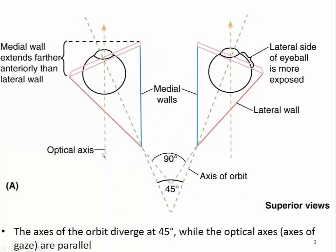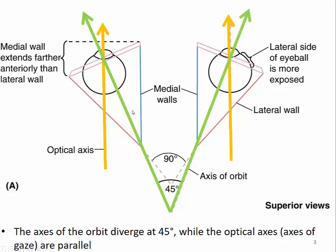Most importantly, to understand why the extraocular muscles act in the way they do: the optical axis diverges by about 45 degrees from the axis of the orbit. The orbits look like pyramids, and when the gaze is straight forwards — the primary position — we have a 45-degree angle between the optical axis and the orbit axis. Many muscles originate from the apex of the pyramid and insert on the eyeball, so they're not pulling on a ball pointing forwards, but on a ball at an angle to the direction of pull, meaning the resulting movement is different than you might anticipate.